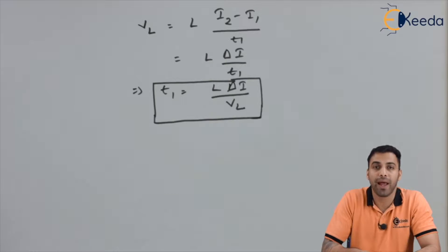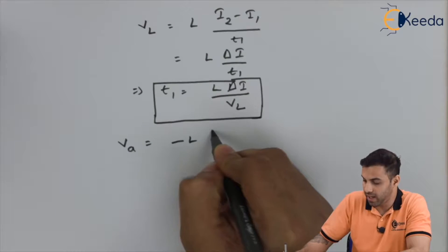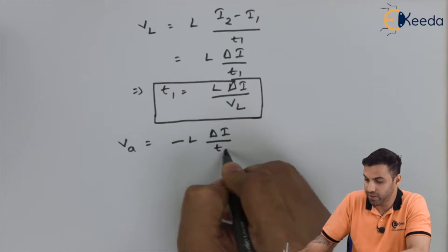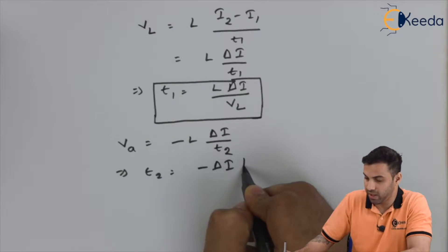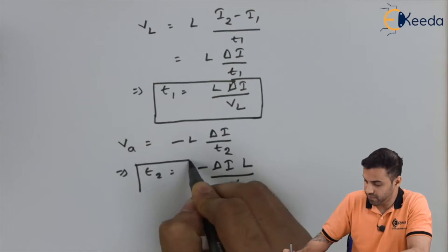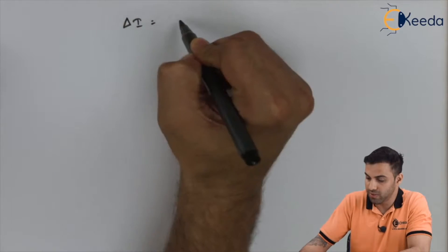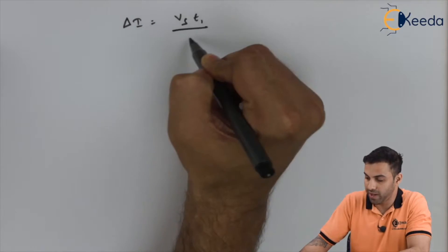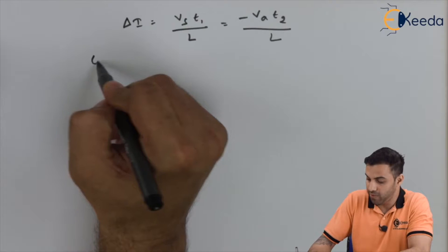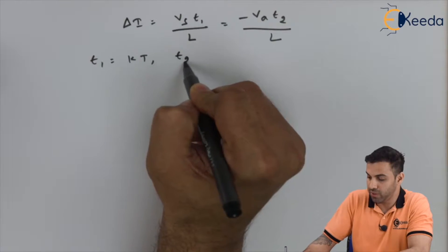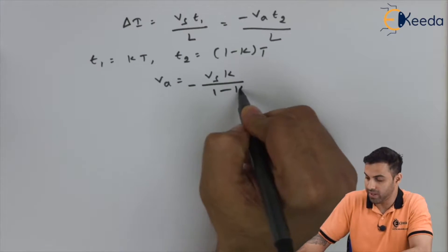Applying KVL during the discharging mode: V_a equals −L·ΔI / t2, hence t2 equals −ΔI·L / V_a. Putting t1 = kT and t2 = (1 − k)·T, we get: V_a = −V_s · k / (1 − k), where V_a is the average output voltage, V_s is the input voltage, and k is the duty cycle.